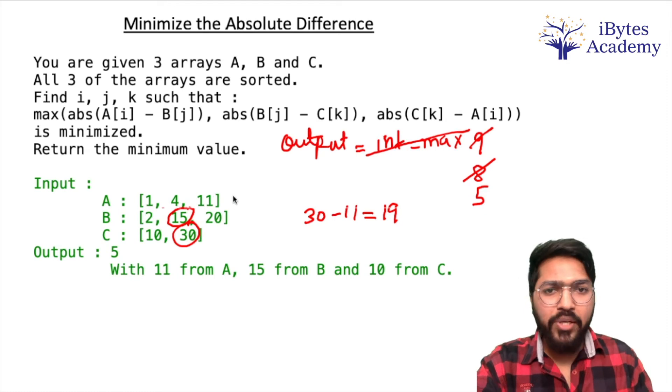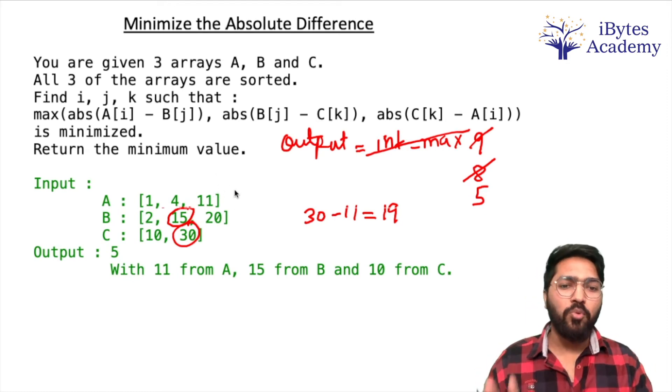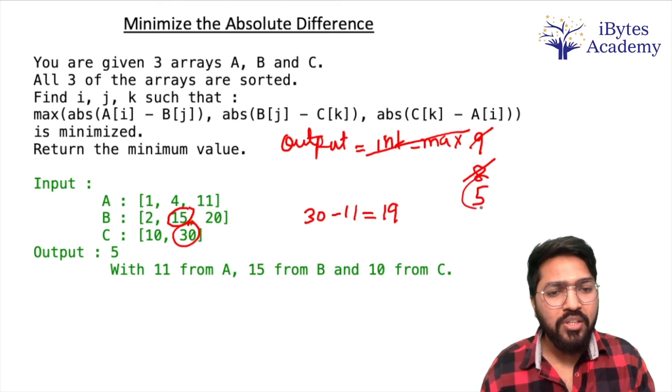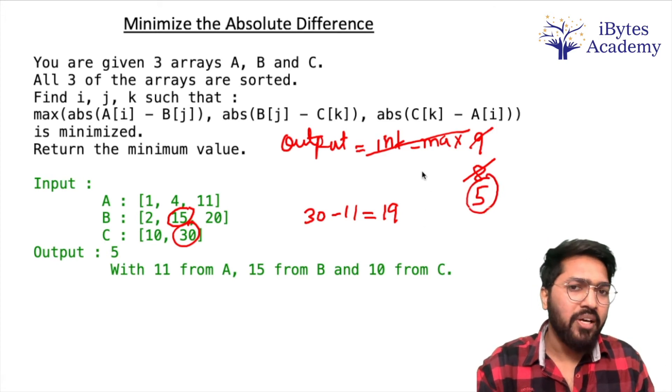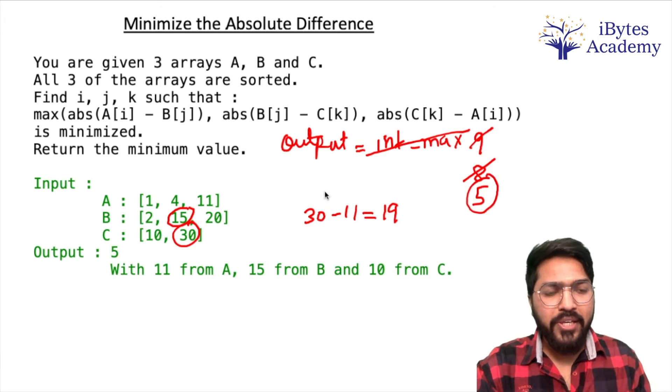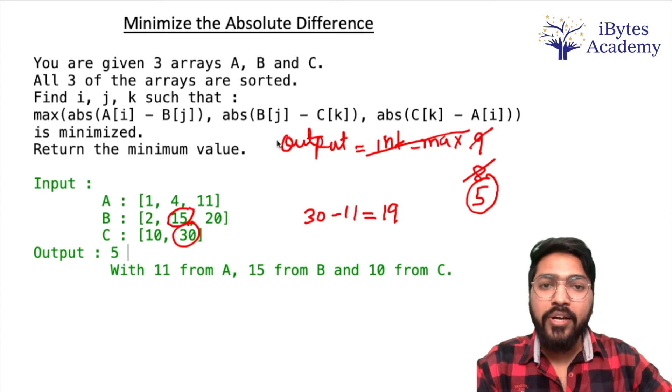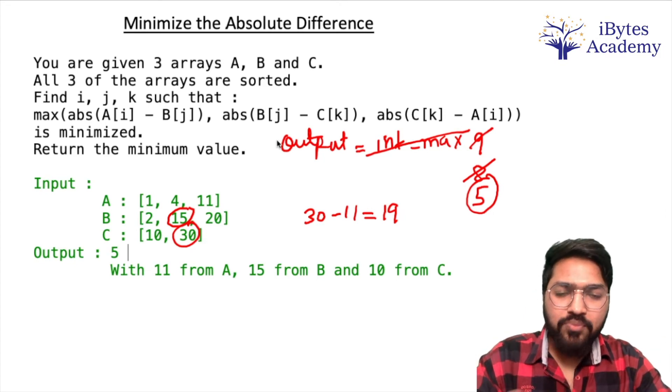Now since minimum is 11, we need to move ahead, but there is no number ahead. So we will just stop our process over here. What is the value of output? We are just going to return it. So 5 is our answer. I hope the solution is clear to everyone. If you want to try the code first, try it. Otherwise I will just show you the code.